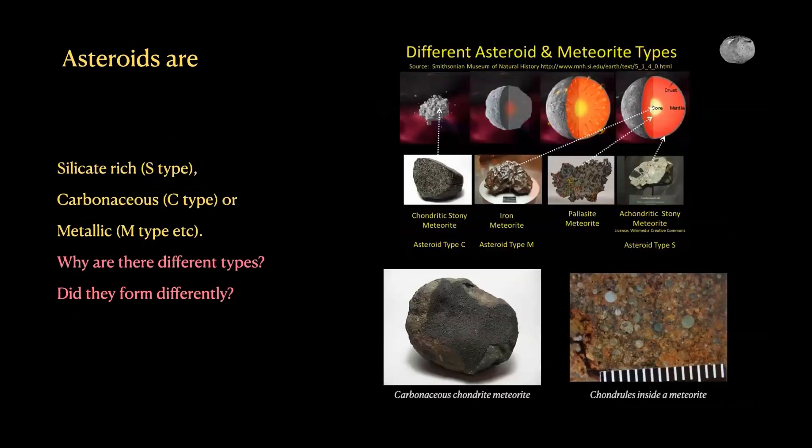Asteroids are of three main kinds. What are they composed of? Like our stones on Earth, asteroids are not all identical — they have various compositions. The most common asteroids are silicate or carbonaceous. What we call stone on Earth is basically silicates — silica plus oxygen form multiple silicates.